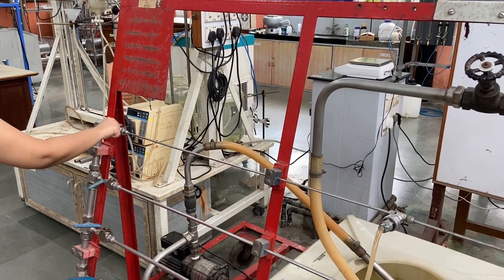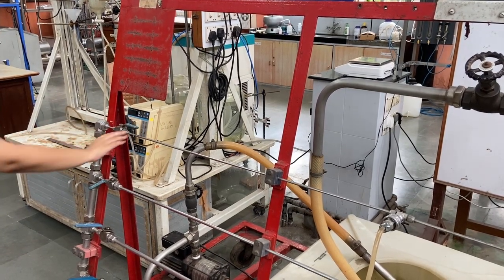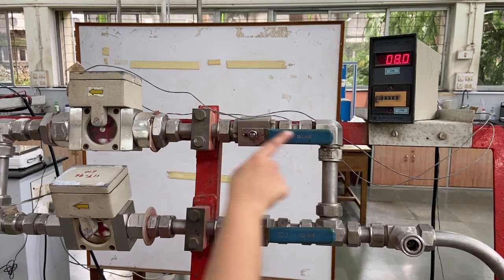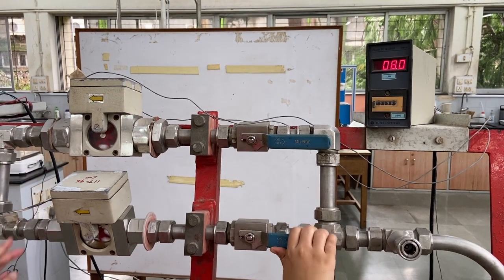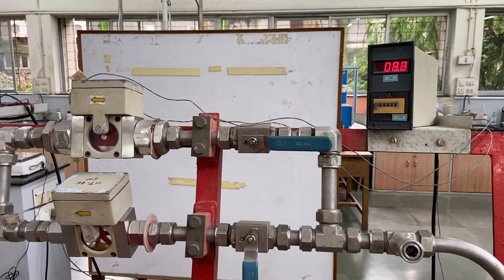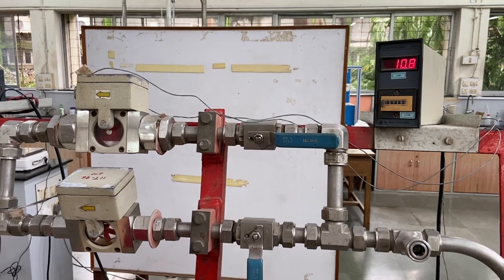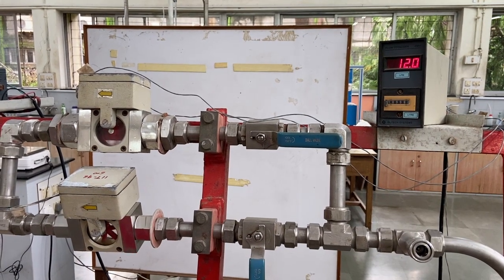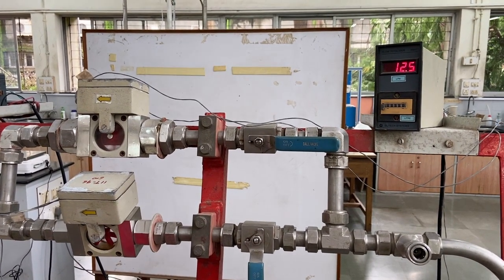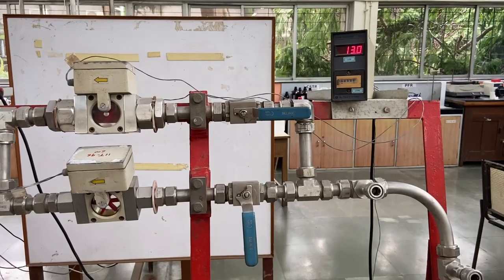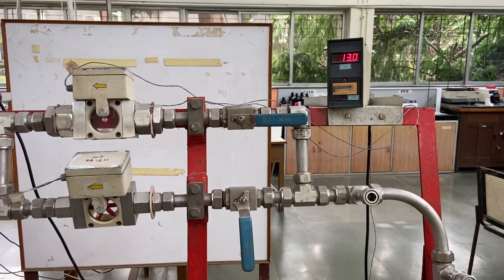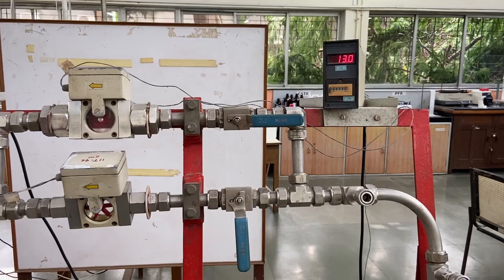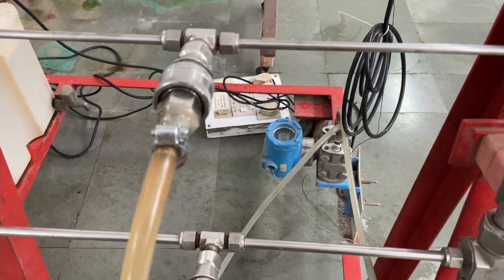We open the inlet valve of the first pipe completely and direct the water flow via the appropriate flow meter. We shall wait for a minute or two for the flow to reach steady state. It might still have some fluctuation but between constant bounds.